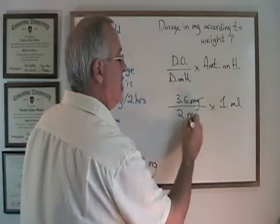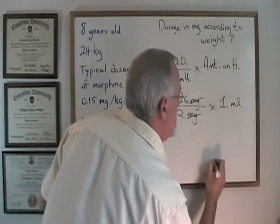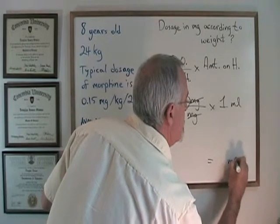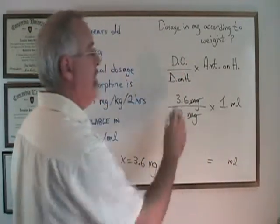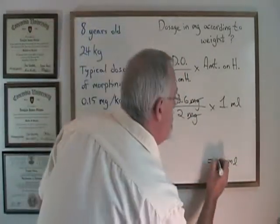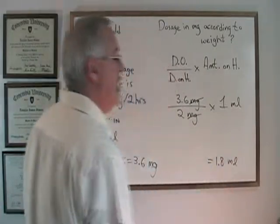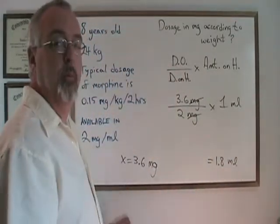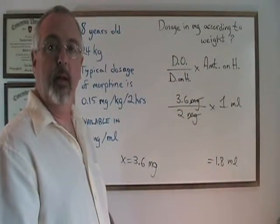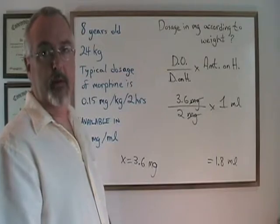The milligrams cancels, so our answer will be in milliliters. 3.6 divided by 2 is 1.8. Therefore, we have to pour 1.8 milliliters of the medication for the patient.